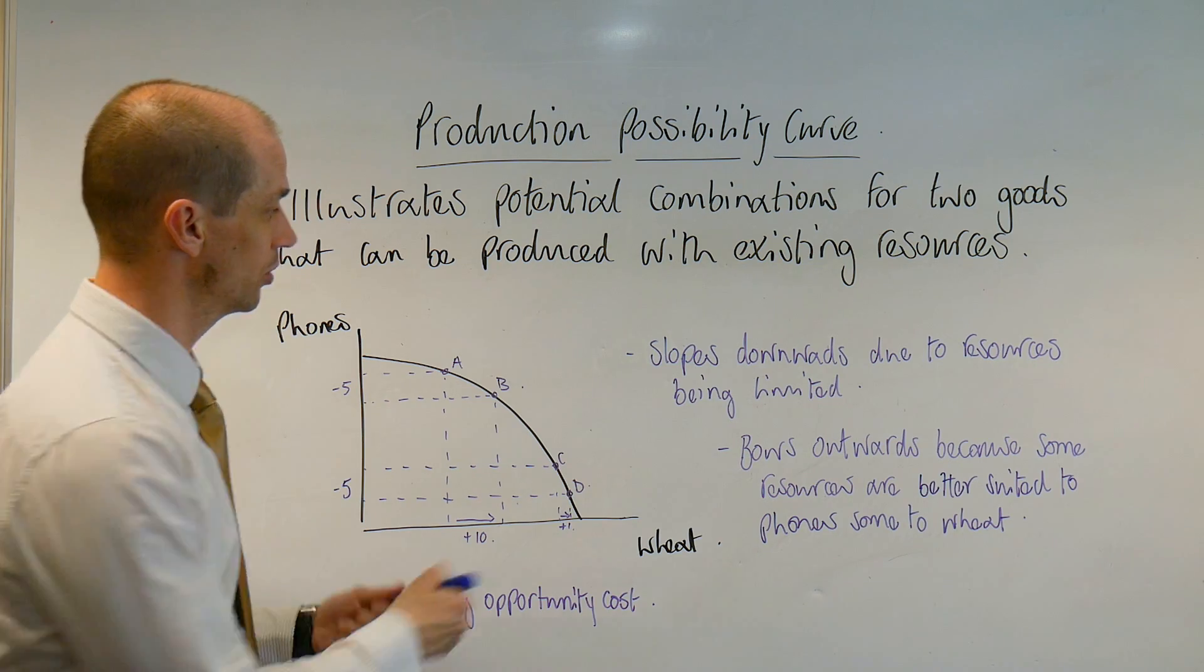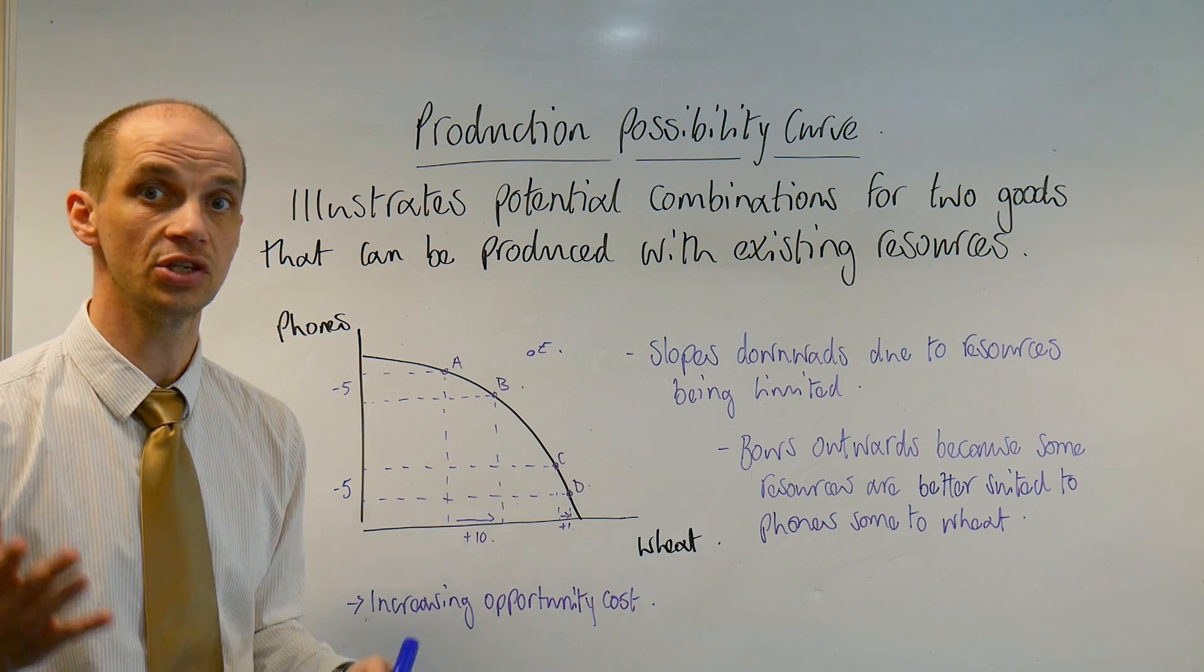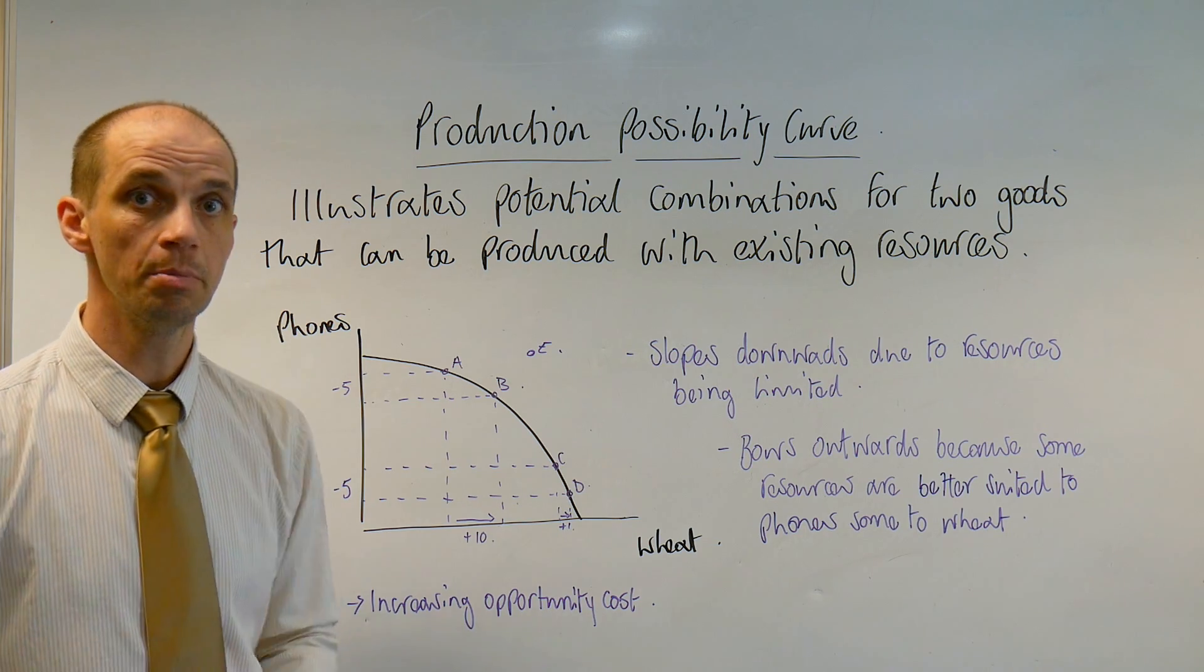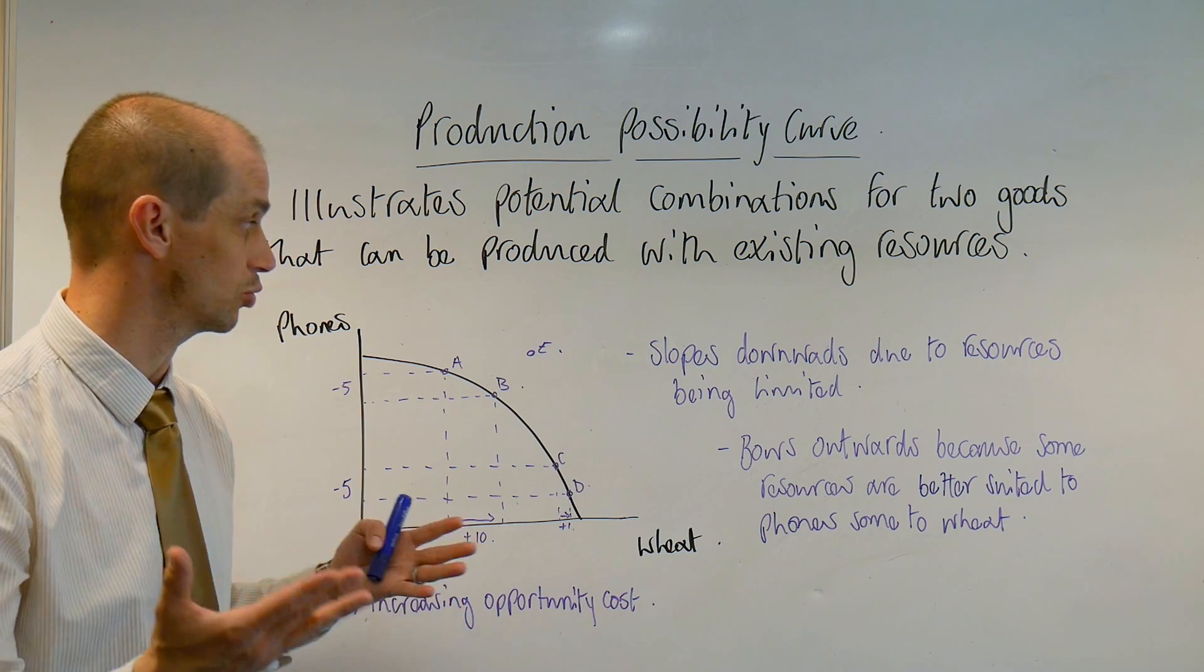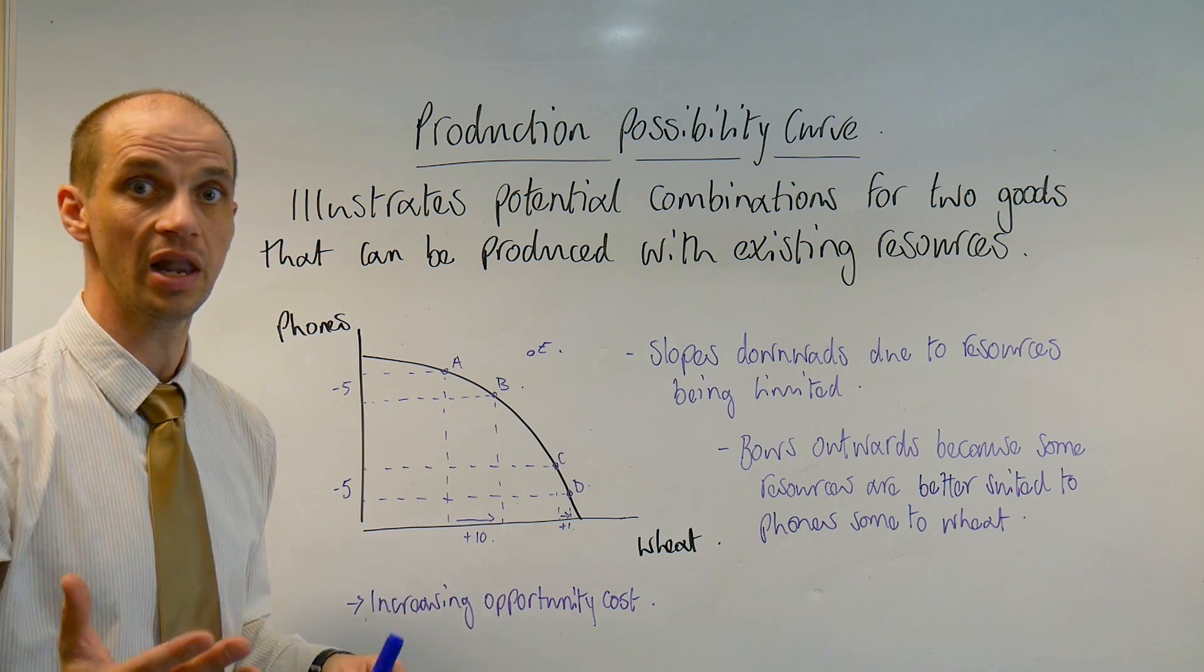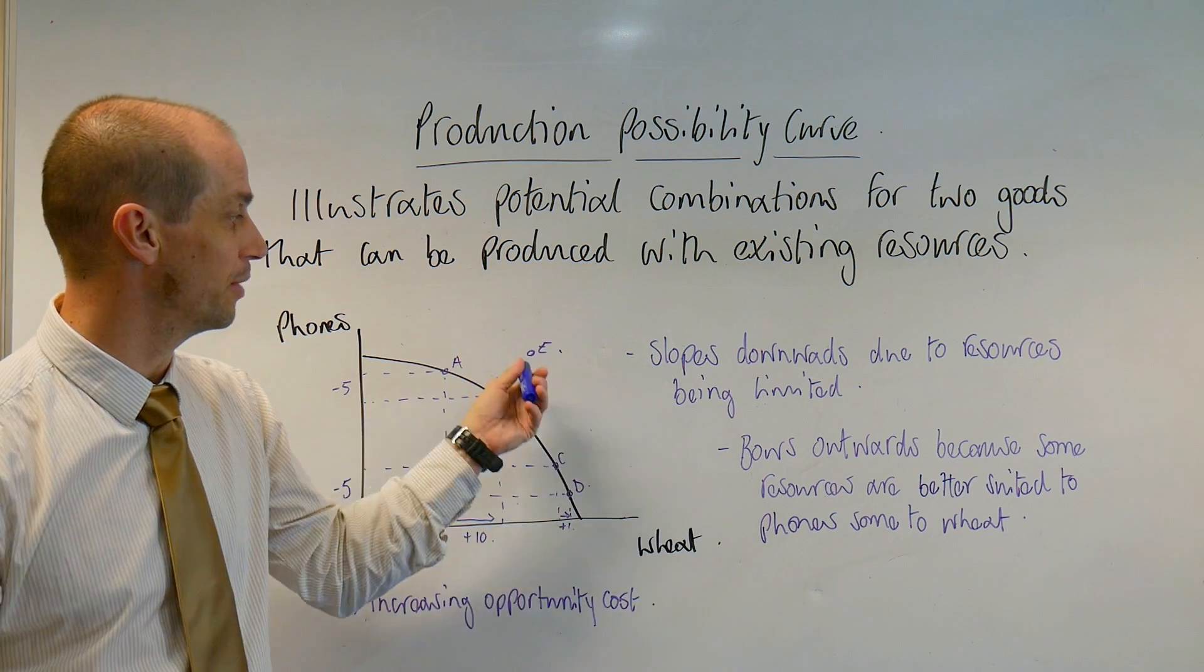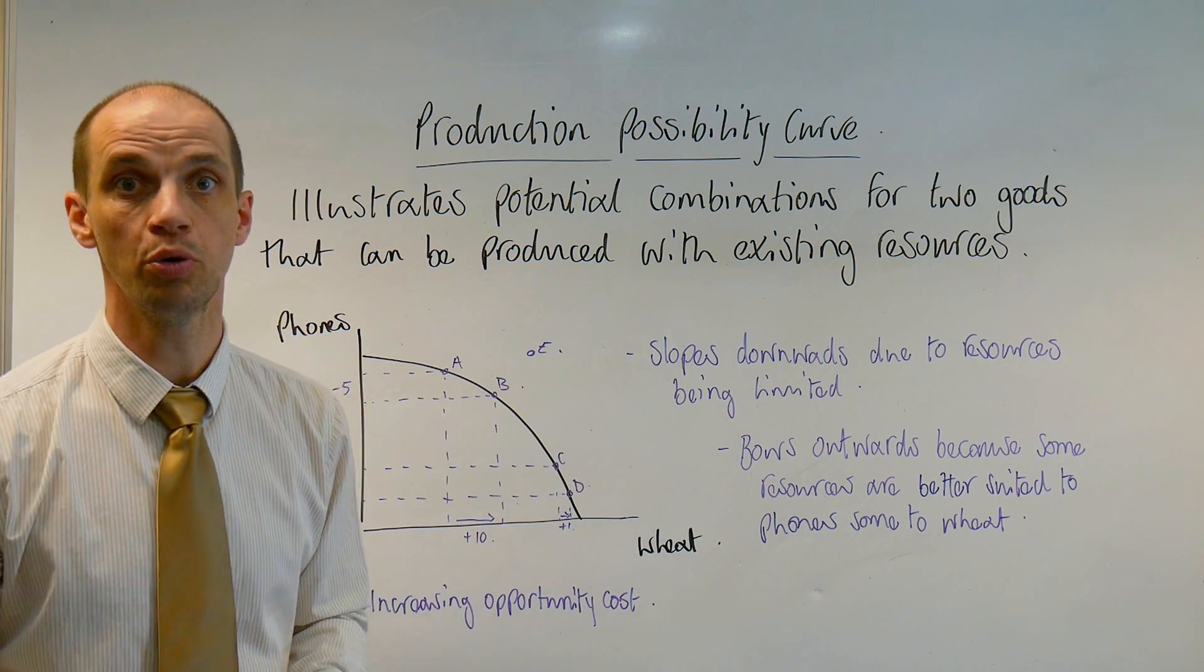Any point beyond here, so if we put in point E here for instance, well that would simply suggest that it's unobtainable with the current resources that are available. But if there were big improvements in terms of the actual quality of those capital goods as well as the quality of the labour inputs, then it is possible that the PPC or PPB if you prefer could actually shift outwards and achieve point E.